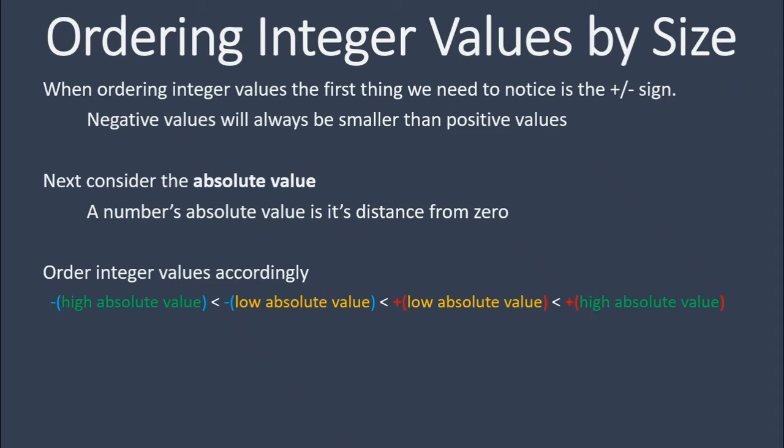Keeping that in mind, we need to order our integer values accordingly. First of all, our negative values are always the smallest, starting with the highest absolute values — meaning the most negative values. Then the lower absolute negative values, so negative values but close to 0. And then we start getting into the positives with the low absolute values — those are positive values close to 0 — and higher positive absolute values, those are the ones further away from 0 in the positive direction, getting bigger and bigger.